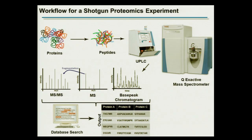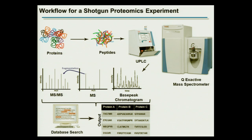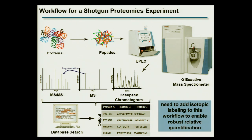After acquisition is complete, raw data is generated and can be put into a database search using a variety of algorithms. This database search looks at MS and MS/MS data and comes up with a list of peptides that can be rolled up into proteins. In a modern experiment, you don't just want to generate lists; you want a quantitative aspect to the workflow so you can look at protein regulation. We therefore need to add an isotopic labeling component to enable robust relative quantification.